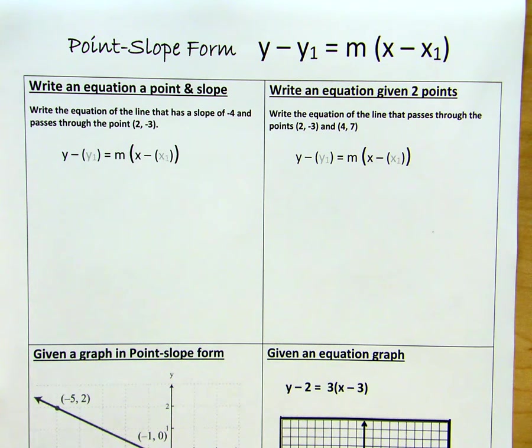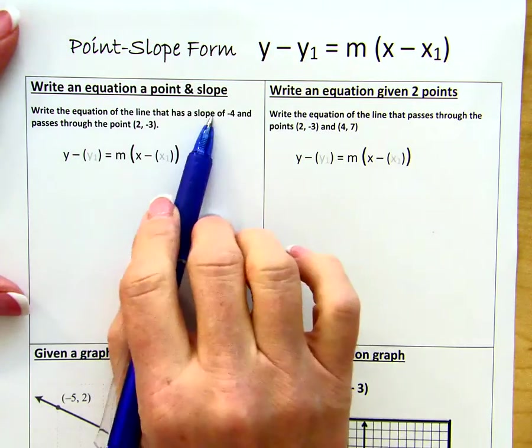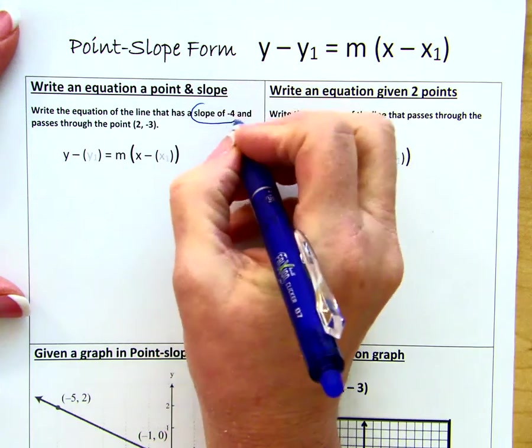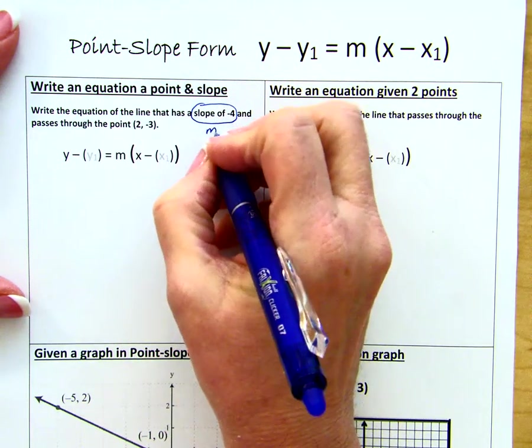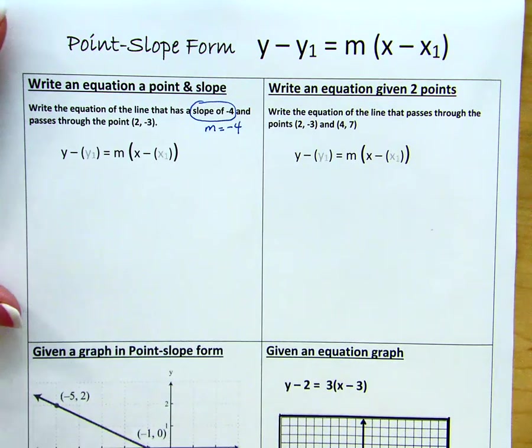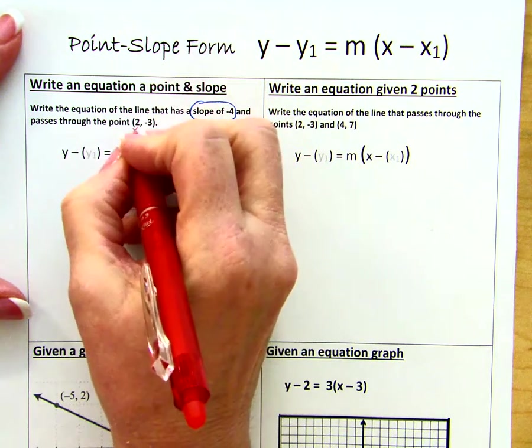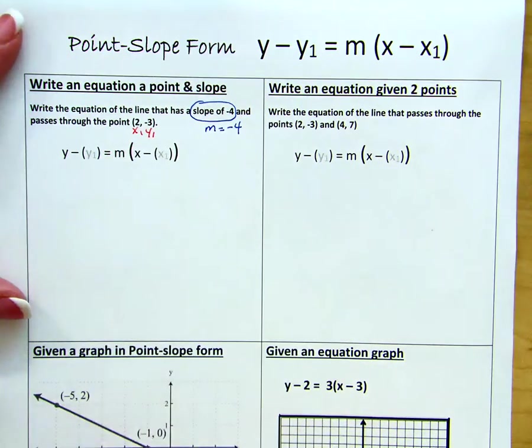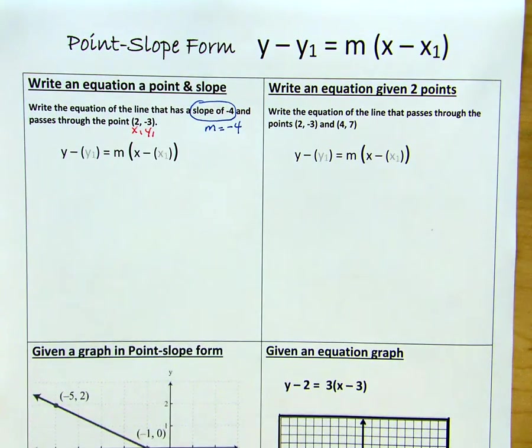So looking at our first equation, they are going to give us a slope. So here's our slope of negative 4. So m equals negative 4. And it's going to pass through this point x sub 1, y sub 1. And that point is 2, negative 3.